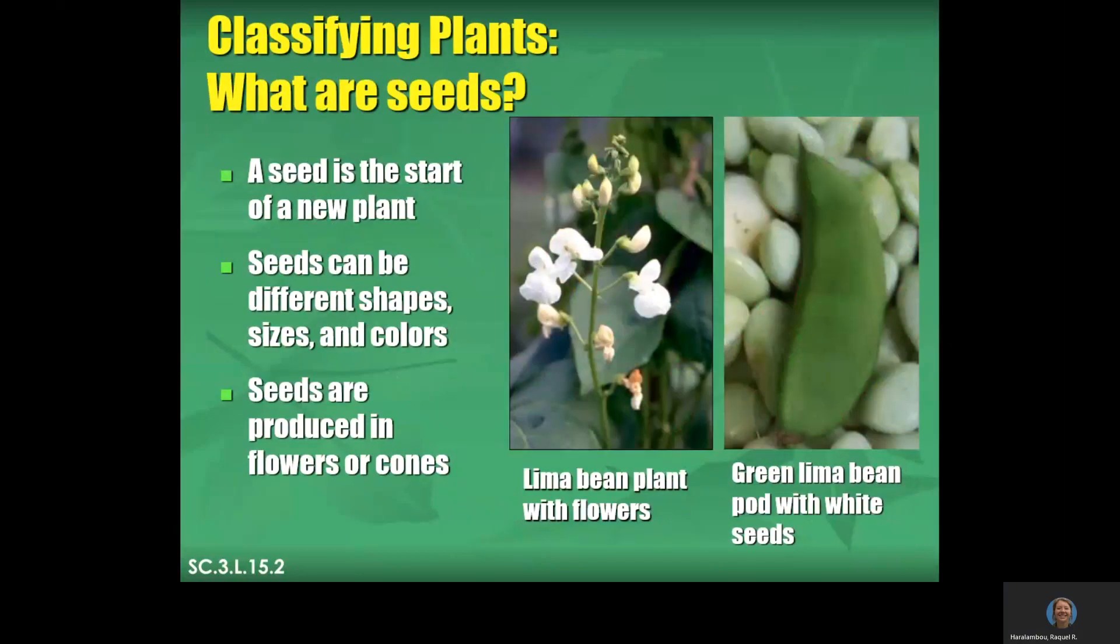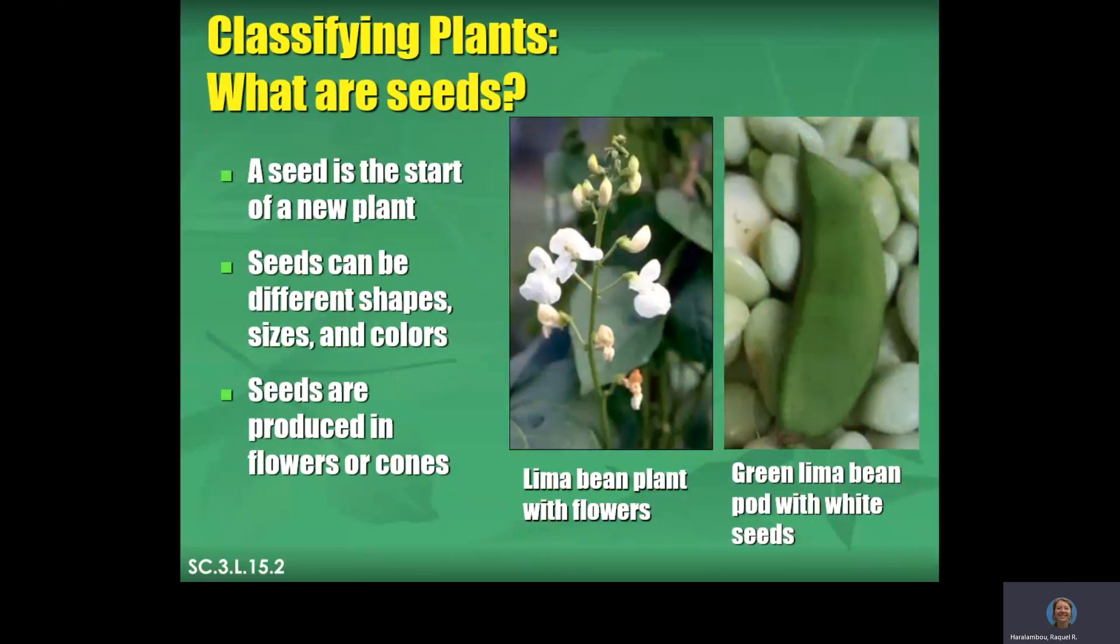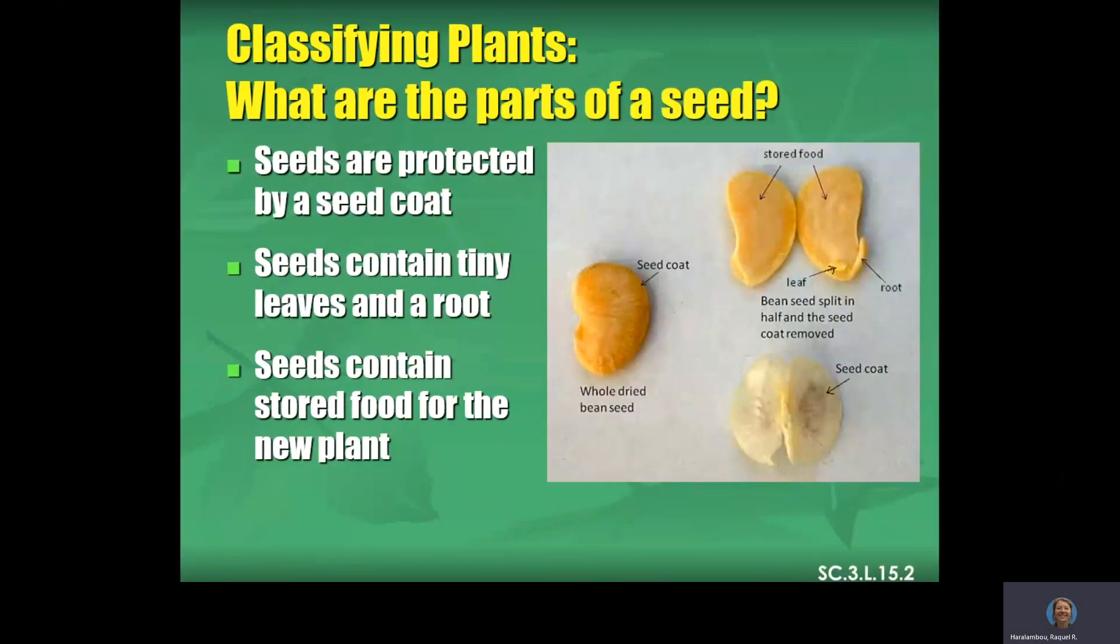Let's look at the difference between them. So a seed is the start of a new plant. Seeds can be different shapes, sizes, and colors. Seeds are produced in flowers or cones. So here is a lima bean plant with flowers. Here is a green lima bean pod with white seeds. So what are seeds, right? Now let's look at parts of a seed. Seeds are protected by a seed coat. Seeds contain tiny leaves and a root. Seeds contain stored food for the new plant. So all of this inside of here. Inside of those seeds is actually food for the seed. So they have everything that they need right there.